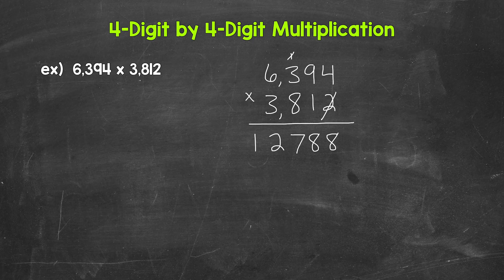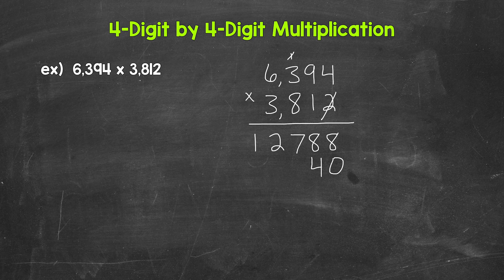Now we move over to the 1 in the tens place. That 1 has a value of 10, so we are doing 6,394 times 10. We need a 0 right here, and then we can multiply. So we do 1 times 4 which is 4, then 1 times 9 is 9, then 1 times 3 is 3, and then 1 times 6 is 6. So 6,394 times 10 gives us 63,940.